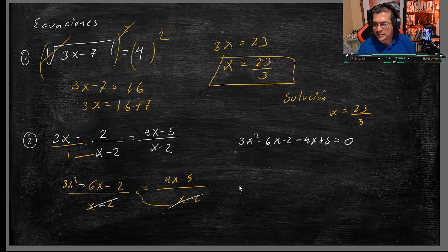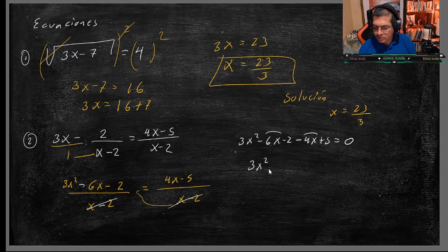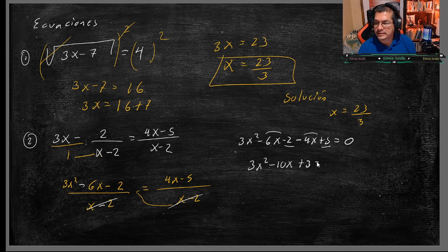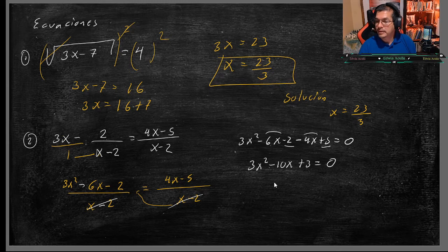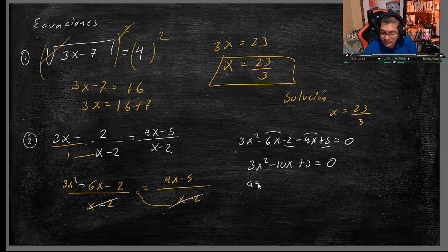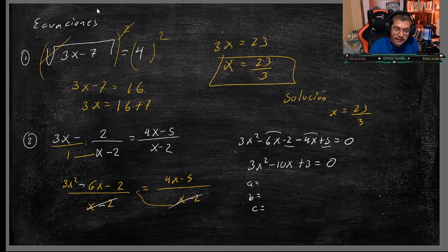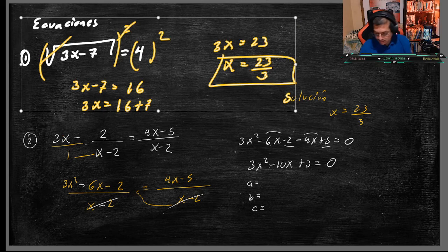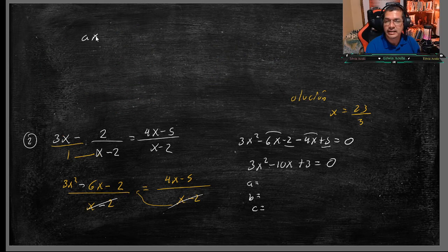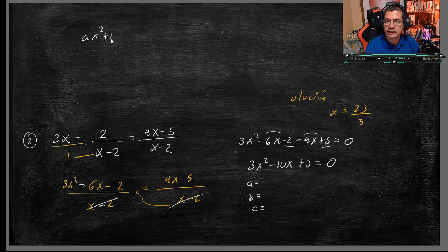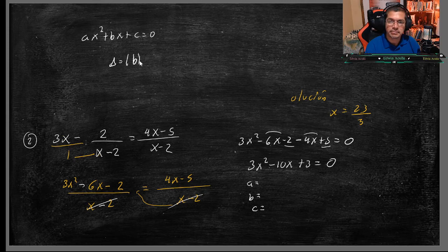Entonces, ¿qué me quedaría? 3X a la 2, menos 6X menos 2, menos 4X más 5. ¿Por qué lo igualamos a 0? Porque me quedaría una cuadrática. Sumo y resto, 3X a la 2, menos 6 menos 4 sería menos 10X, y menos 2 más 5 sería más 3, es igual a 0. ¿Por qué saco esos valores? Porque yo necesito una función cuadrática de la forma AX2 más BX más C es igual a 0, para sacar el discriminante, que es B a la 2 menos 4 por A por C.